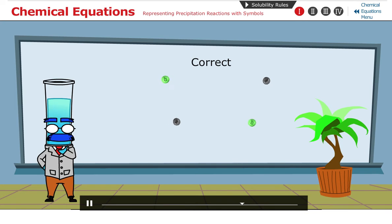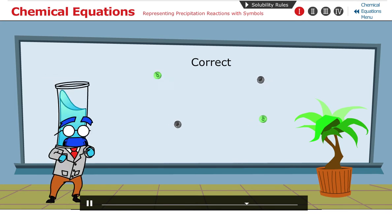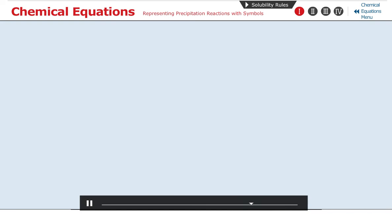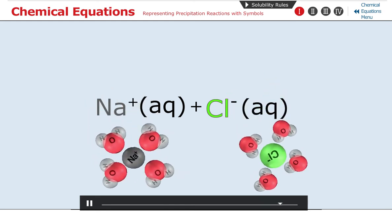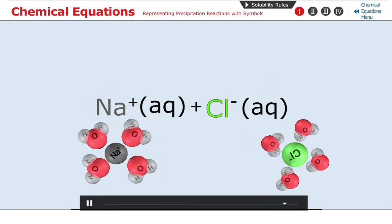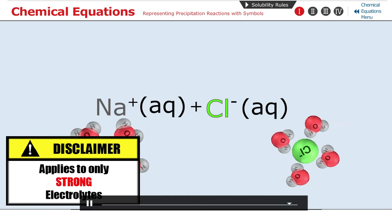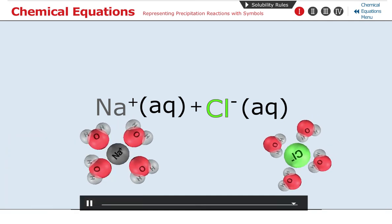Another way to represent an aqueous solution of sodium chloride is Na+(aq) plus Cl-(aq). This representation is more obvious, showing that the aqueous solution is made up of separated sodium and chloride ions. Both formulas represent the same solution.